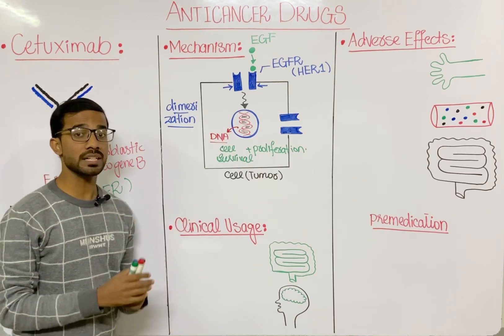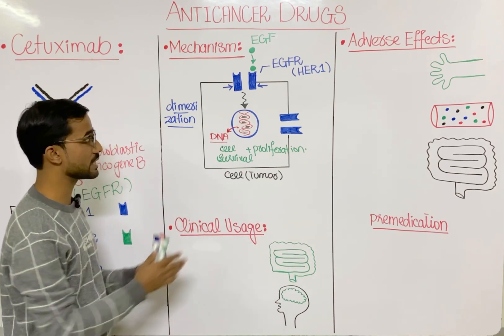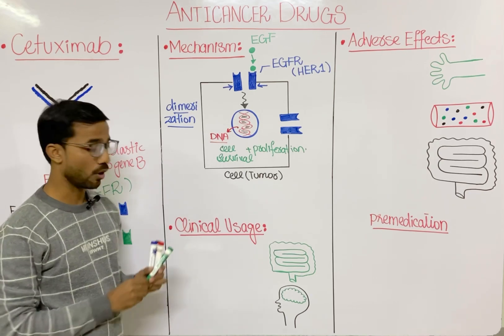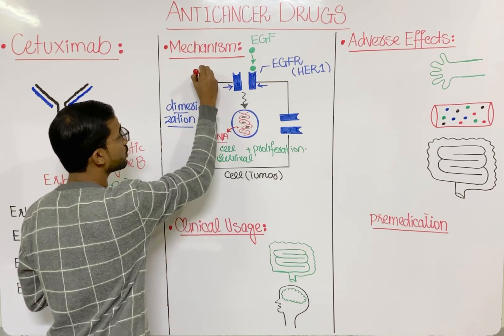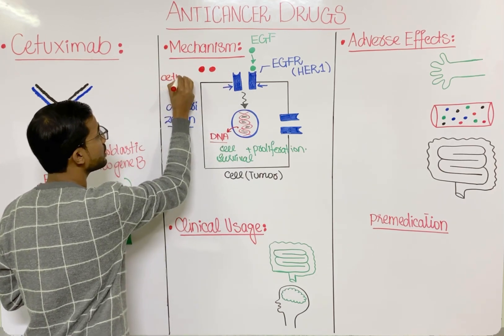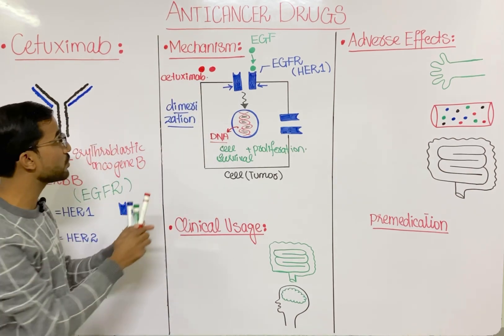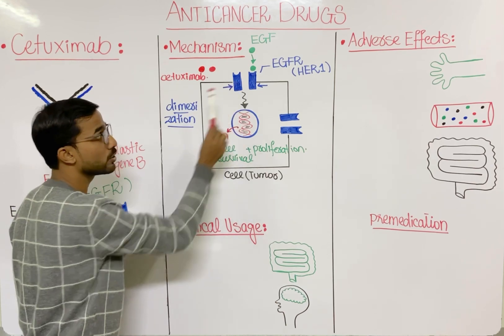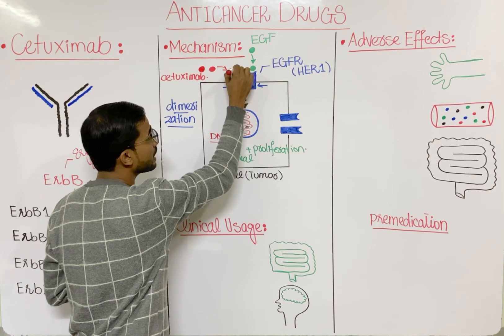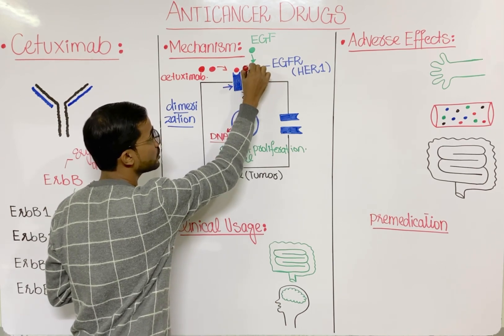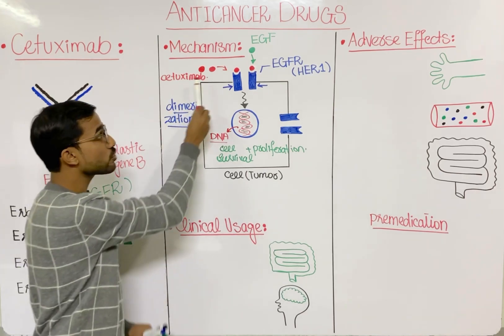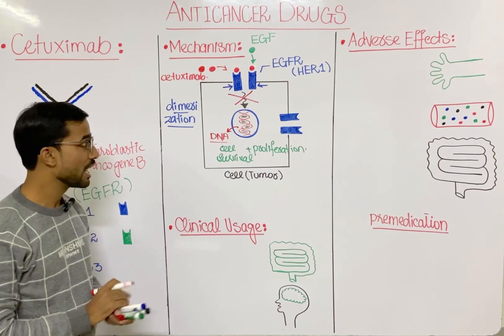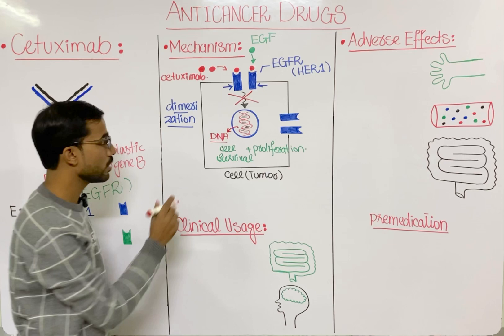Now, the question is: what does cetuximab do in this whole process? This is the normal process happening in tumor cells, and we want to stop this signal transduction. There is a competition between cetuximab and epidermal growth factor, because both can bind to the epidermal growth factor receptor. When cetuximab binds to the receptor, it stops the signal transduction.